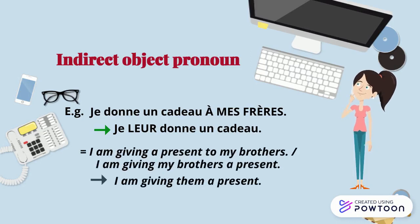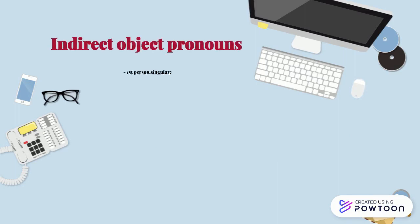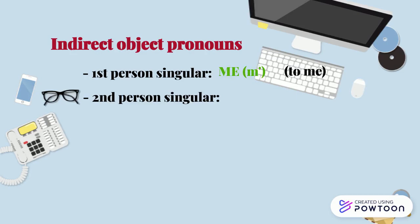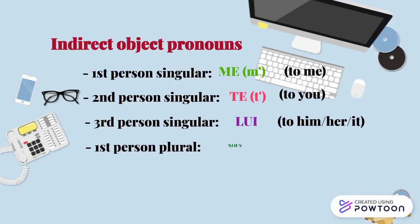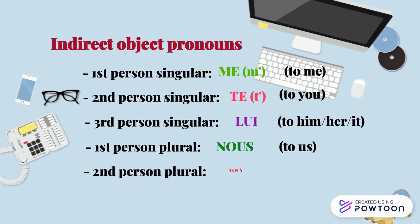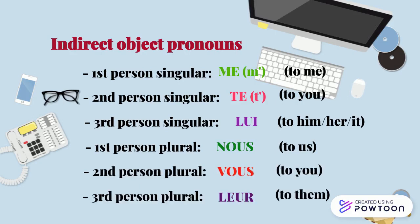The indirect object pronouns are: first person singular — me, or m' before a vowel or silent h, meaning 'to me.' Second person singular — te, or t', meaning 'to you.' Third person singular — lui, meaning 'to him,' 'to her,' or 'to it.' First person plural — nous, meaning 'to us.' Second person plural — vous, meaning 'to you.' Third person plural — leur, meaning 'to them.'